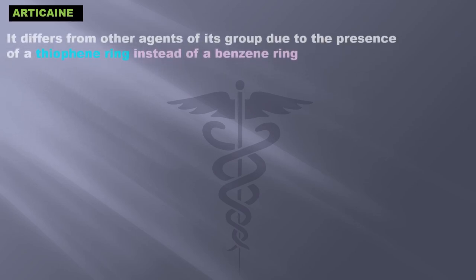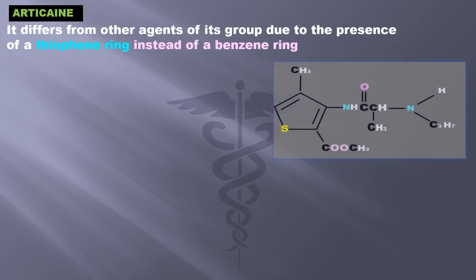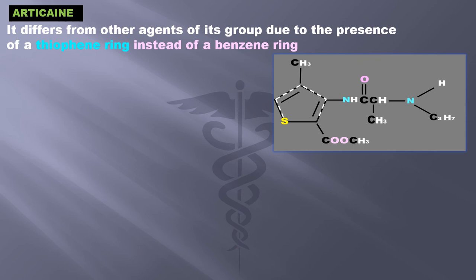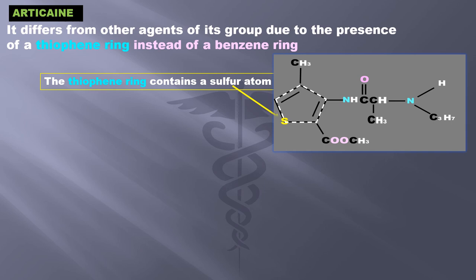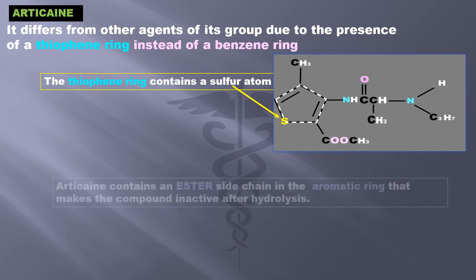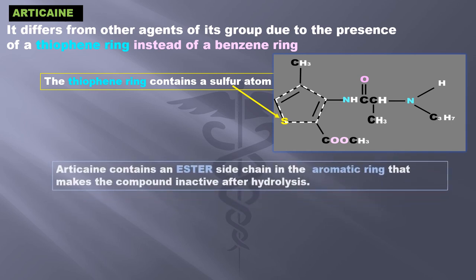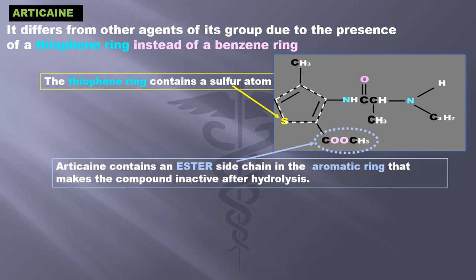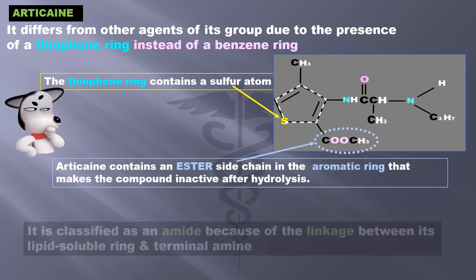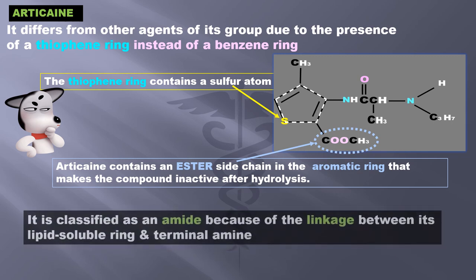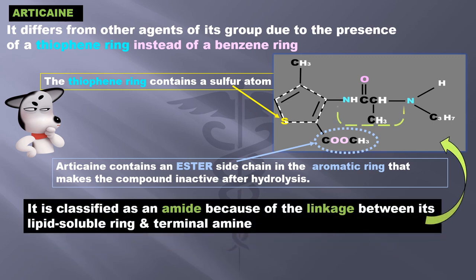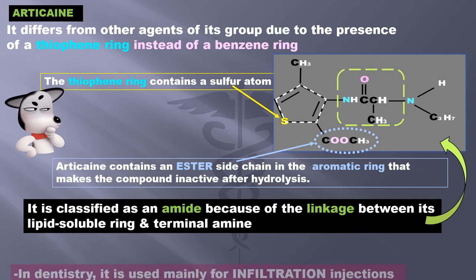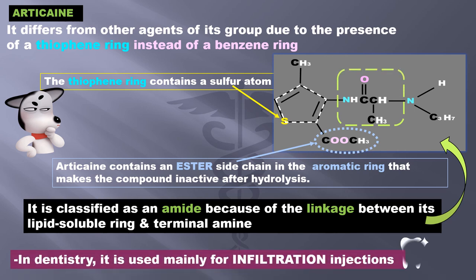Another interesting amide is articaine. It differs from other agents of its group due to the presence of a thiophene ring instead of a benzene ring, and the thiophene ring contains a sulfur atom. Articaine contains an ester side chain in the aromatic ring that makes the compound inactive after hydrolysis. It is classified as an amide because of the linkage between its lipid-soluble ring and terminal amine. In dentistry, it is used mainly for infiltration injections.